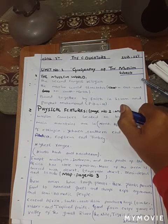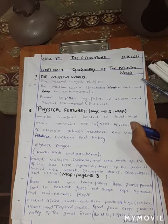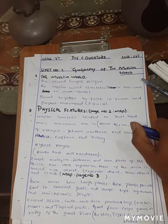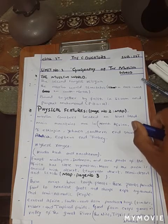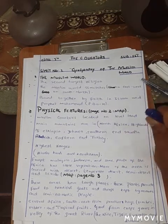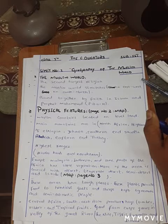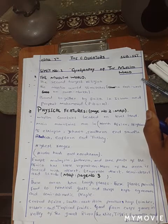The second heading is physical features. On page number two you will see two maps. The first map shows you the political view of Muslim countries — their territories and their borders. The map below shows the physical features of the Muslim world. Starting our second heading, the first point is that Muslim countries are located on level land — they are not located on high or low land. Main mountains are in North Africa, highlands of Ethiopia, Yemen, the southern end of Saudi Arabia, and the eastern end of Turkey. There are two highest ranges: Hindu Kush, which lies beside Afghanistan, and Karakoram in Pakistan.